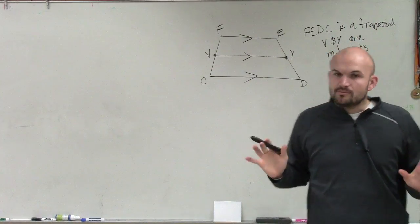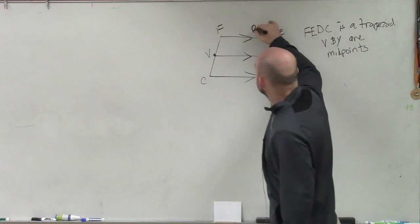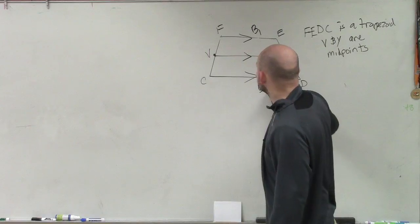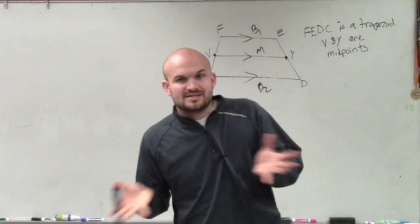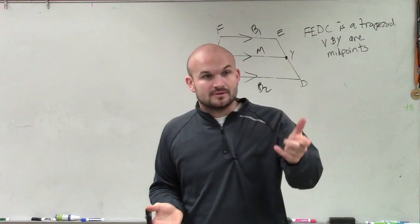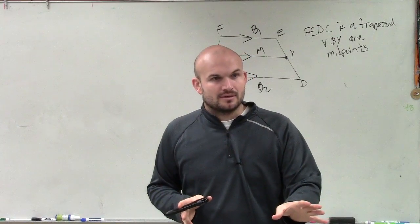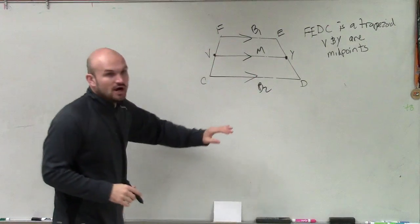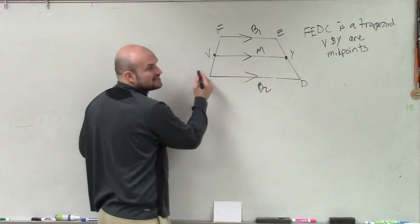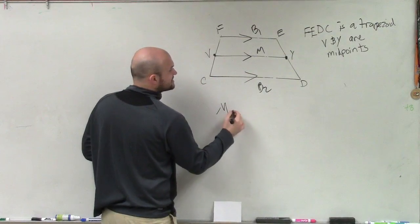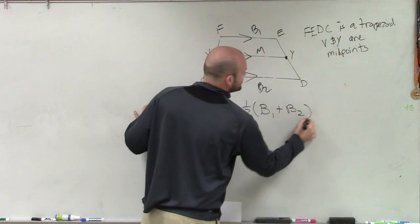Now, what was really important about this was there is a formula for all this, right? If I called this base one and this base two and this the midsegment, do you guys remember there is a formula for how these lengths were connected? So what we had was, what we talked about was, our midsegment, which I'll call M in this case, is equal to 1 half base one plus base two.